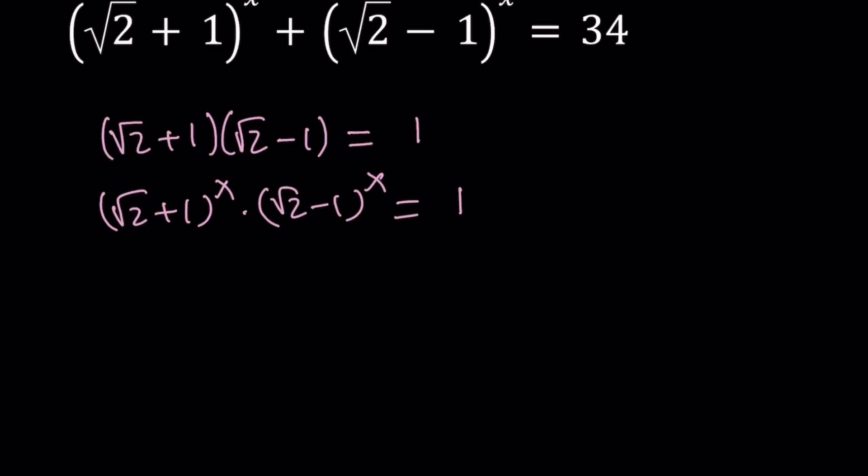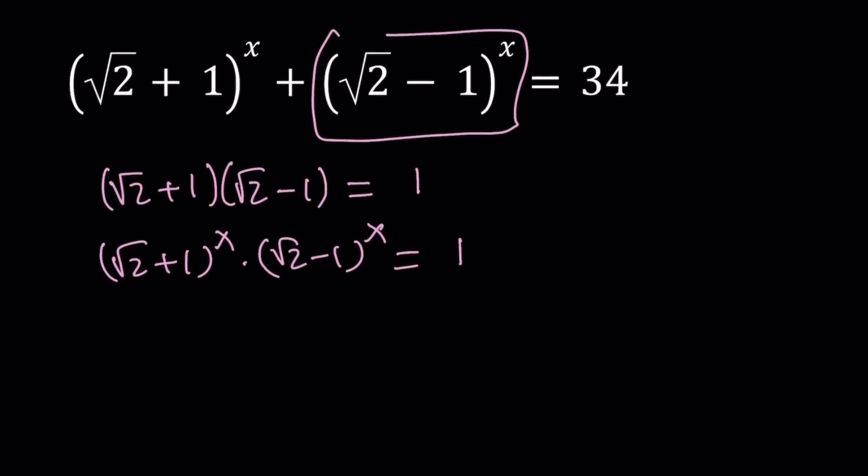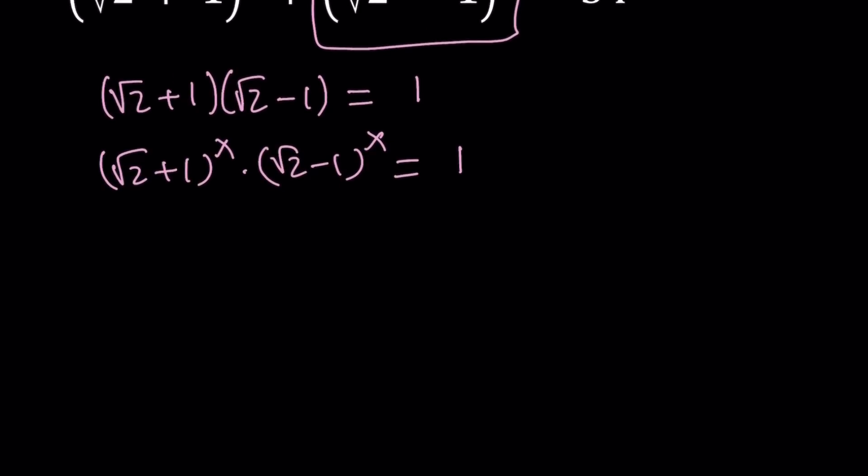So this allows us to write the second one, which is this one right here, as the reciprocal of the first one. Let's go ahead and do that. Square root of 2 minus 1 to the power x equals 1 over square root of 2 plus 1 to the power x.